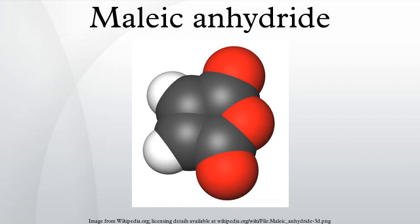Maleic anhydride is an organic compound with the formula C2H2. It is the acid anhydride of maleic acid. It is a colorless or white solid with an acrid odor. It is produced industrially on a large scale for applications in coatings and polymers.